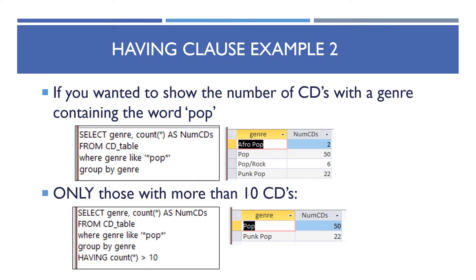Here's another HAVING example. To show the number of CDs with a genre containing the word 'pop': SELECT genre, COUNT(*) AS num_cds FROM cd_table WHERE genre LIKE '*pop*' GROUP BY genre. The WHERE clause applies to the genre field, not the aggregate. To filter on the aggregate result you add: HAVING COUNT(*) > 10, which only shows genres with more than 10 CDs.